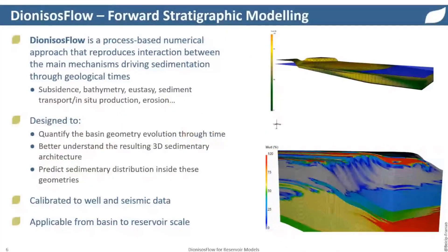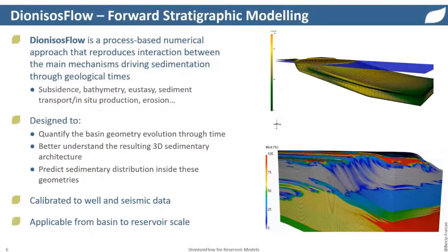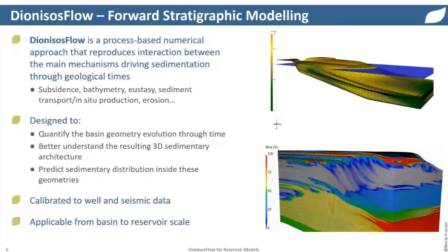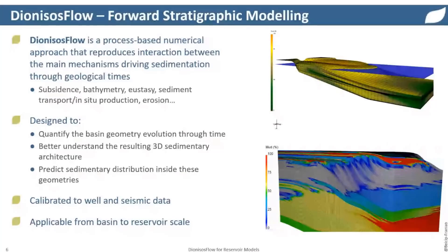Forward stratigraphic modeling is a process-based numerical approach that reproduces the interactions between the main mechanisms that control and drive sedimentation through geological time in a sedimentary basin, in order to reproduce the rock succession — the stratigraphy and sedimentology within that basin. The processes incorporated include subsidence, bathymetry, eustatic sea level variation, climatic cycles, sediment input and types, carbonate production, ecological constraints, erosion, and wave energy. It is designed to quantify the basin's geometry evolution through time, reproducing the three-dimensional sedimentary architecture and its internal lithological content.